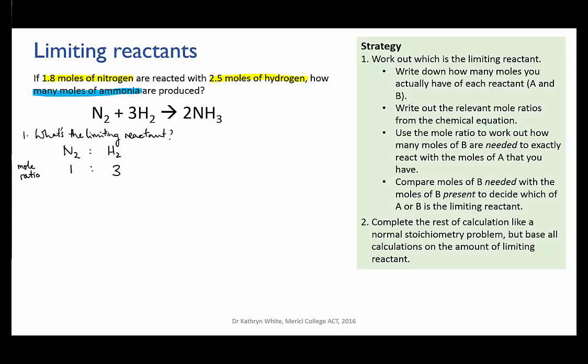Now we choose one of the reactants and we write the number of moles that we actually have underneath the mole ratio. It doesn't matter which one we choose because it's a ratio we can use it in either direction. So let's take nitrogen for this example. We have 1.8 moles of nitrogen.